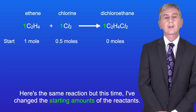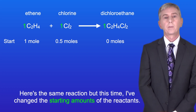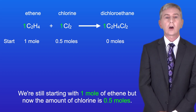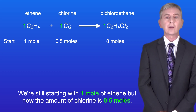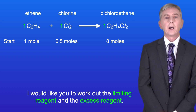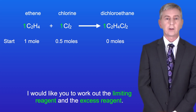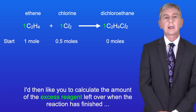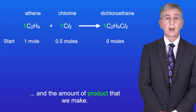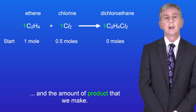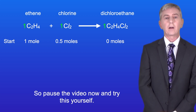Here's the same reaction but this time I've changed the starting amounts of the reactants. We're still starting with one mole of ethene but now the amount of chlorine is 0.5 moles. I'd like you to work out the limiting reagent and the excess reagent, then calculate the amount of excess reagent left over when the reaction is finished and the amount of product that we make. Pause the video now and try this yourself.